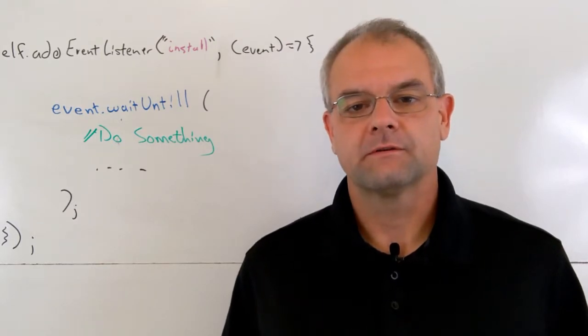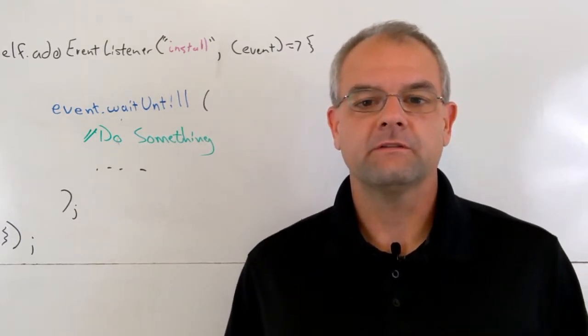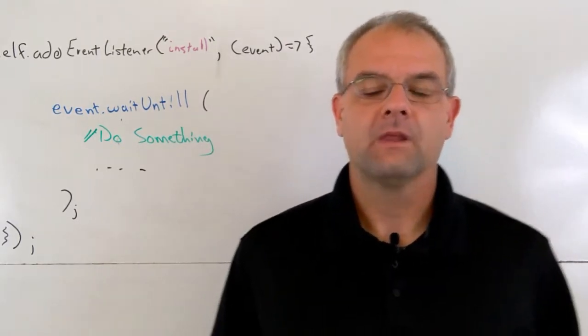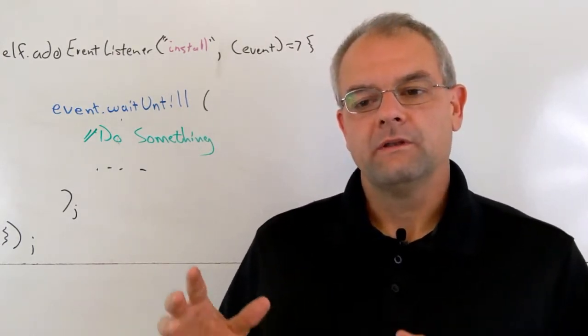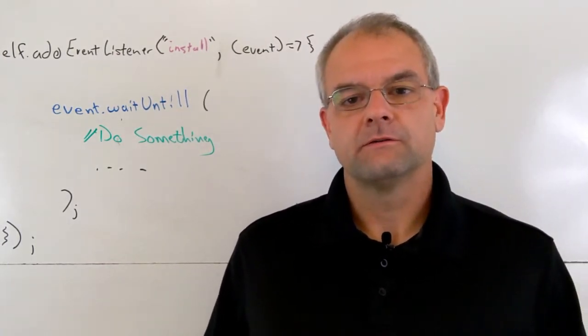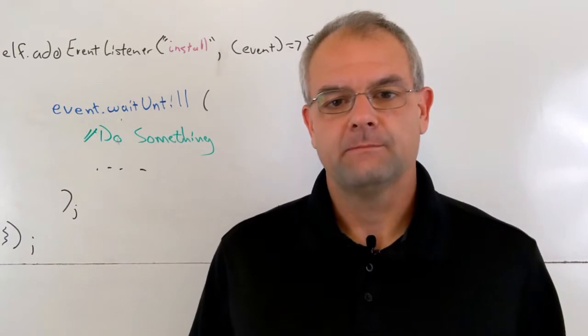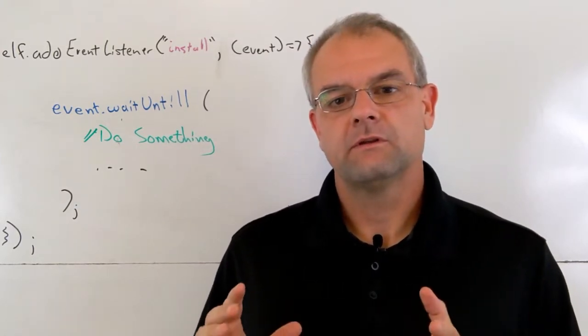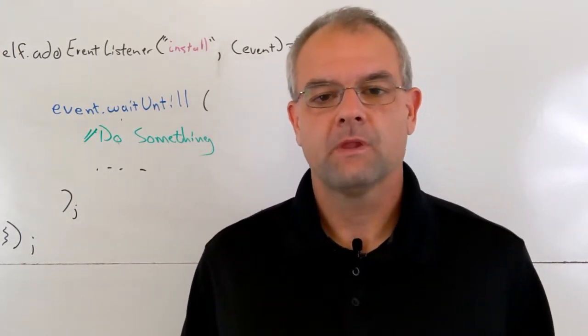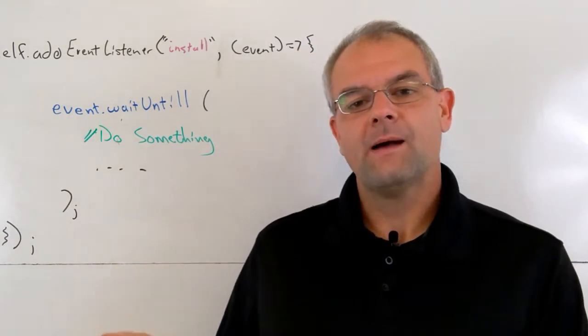Well, this is a very important function for service workers in the install and activate events. When you bind an event handler to either install or activate, that event can close at any time. But if you wrap your activity, which should be in a promise, inside event.waitUntil, it utilizes a specific member.